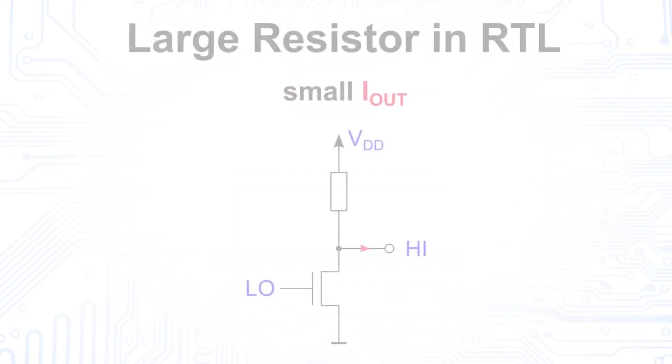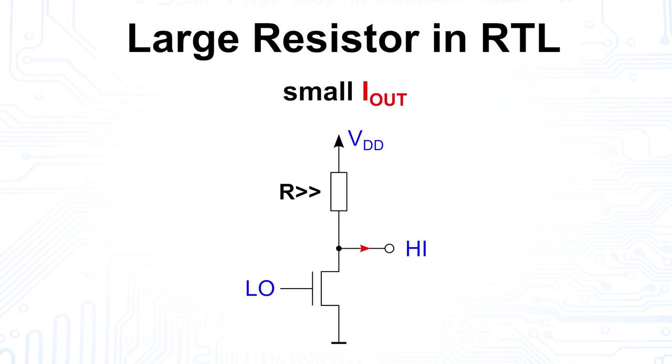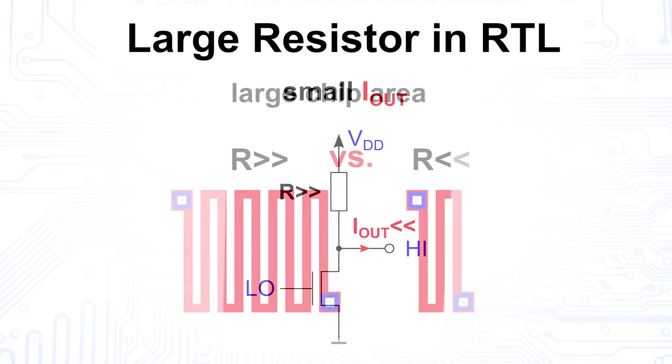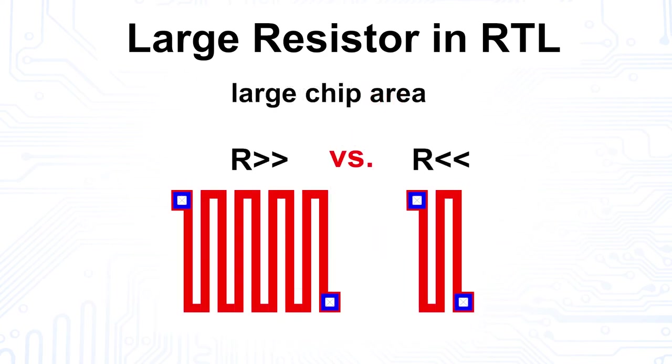A large resistor would help, but this reduces the possible output current on the one hand and consumes a lot of chip area on the other, which is why RTL cannot be built as small as CMOS.